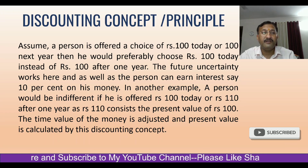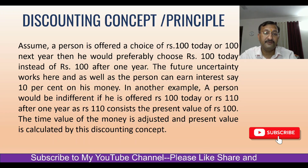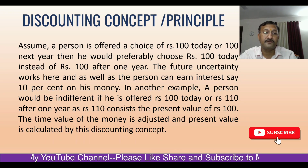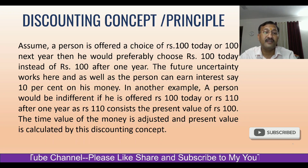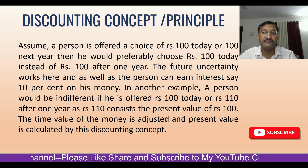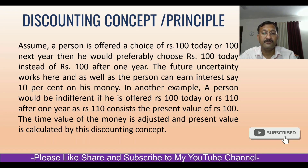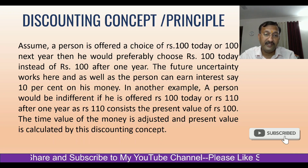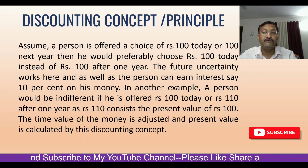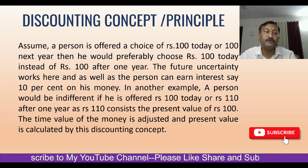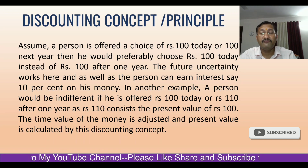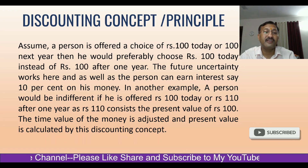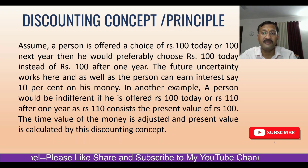In another example, a person would be indifferent if offered 100 rupees today or 110 rupees after one year, because 110 consists of the present value of 100 plus interest. So whatever a person receives after one year as 110, its value is equivalent to 100 rupees today. The time value of money is adjusted and present value is calculated using the discounting concept.